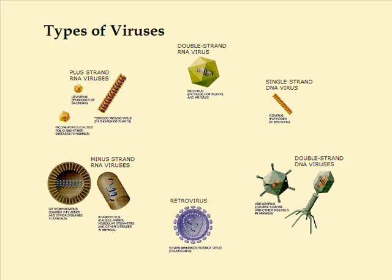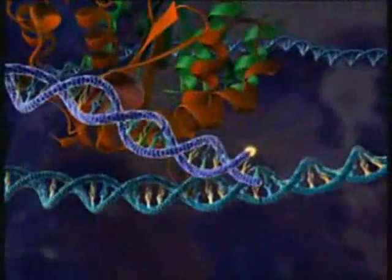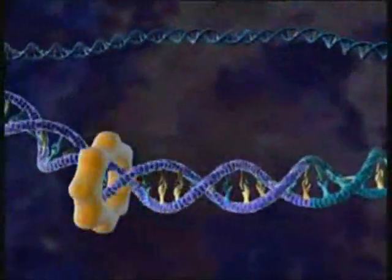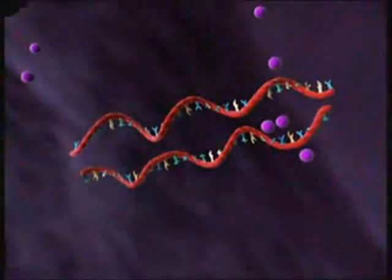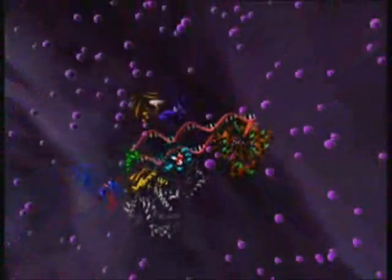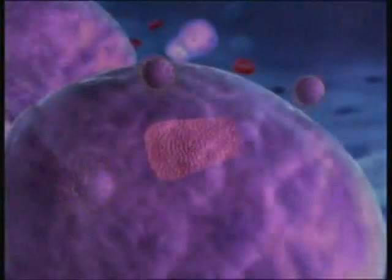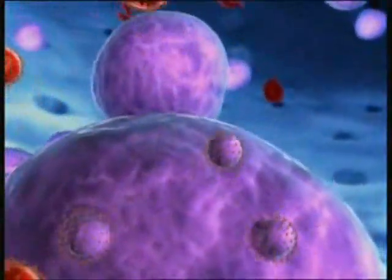Let's start by defining a retrovirus. A retrovirus is a specific type of virus that uses RNA rather than DNA as its genetic material. It reproduces by inserting its genome into a host cell. The host cell's normal transcription and translation mechanisms then express the viral genes, which build new variants within the cell. Finally, these variants bud from the original cell, free to infect other cells.